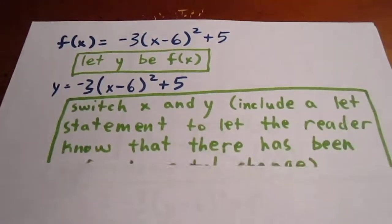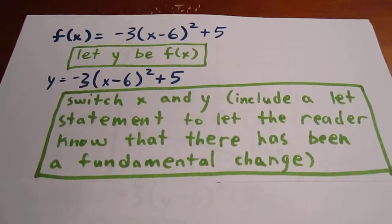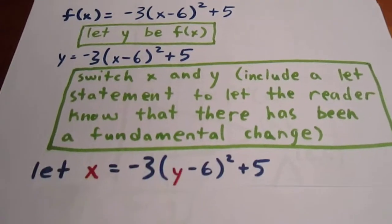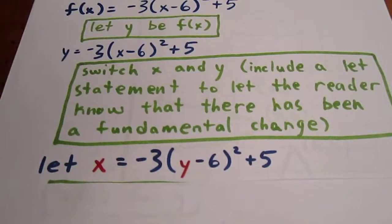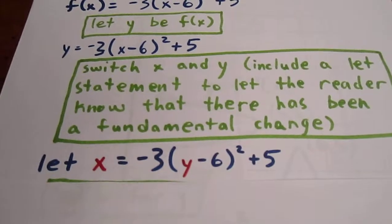We then switch x and y, including a let statement to let the reader know there's been a fundamental change. So, x is equal to negative 3 times y minus 6 squared plus 5.